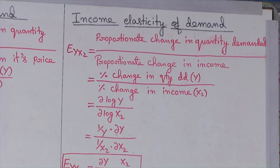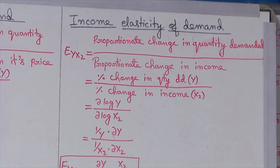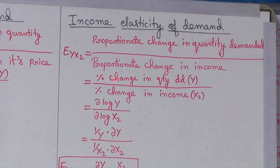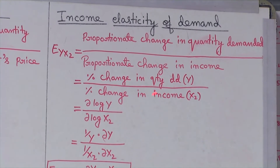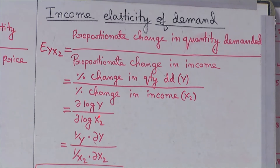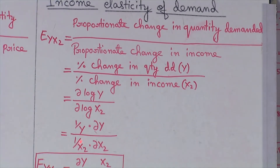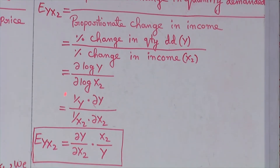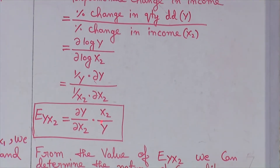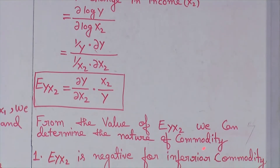Now we shall derive the income elasticity of demand. The income elasticity of demand can be obtained by taking the ratio of proportionate change in quantity demanded to the proportionate change in income, which is equal to percentage change in quantity demanded divided by percentage change in income. That is ∂log y / ∂log x2. So ∂log y = (1/y)·∂y and ∂log x2 = (1/x2)·∂x2. Therefore, the income elasticity of demand E_YX2 = (∂y/∂x2)·(x2/y). From this value we can determine the nature of the commodity.